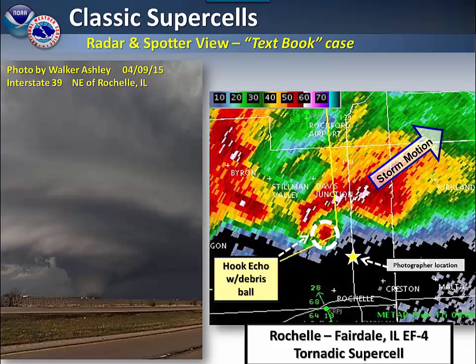This particular storm occurred across northern Illinois a few years ago and produced an EF4 tornado. The radar presentation is basically a textbook case of what we would look for. We have a hook echo located within the circle, and within that hook echo is high reflectivity caused by debris being lofted up from the tornado.